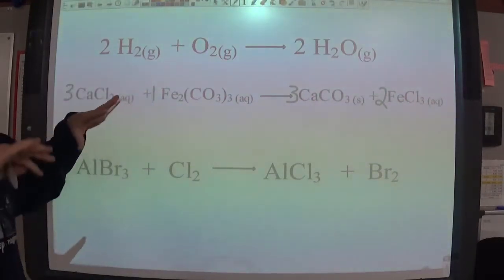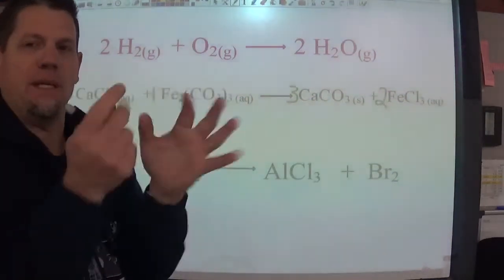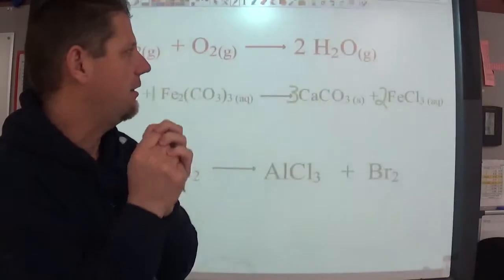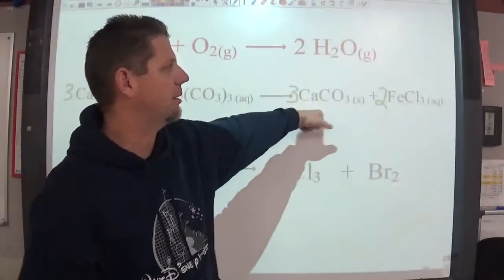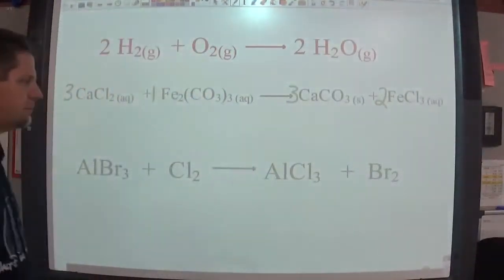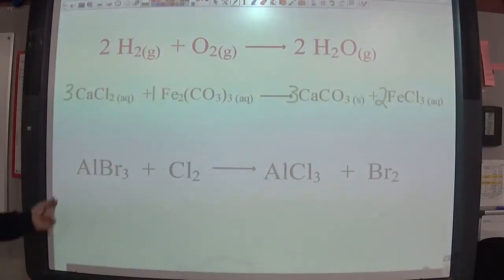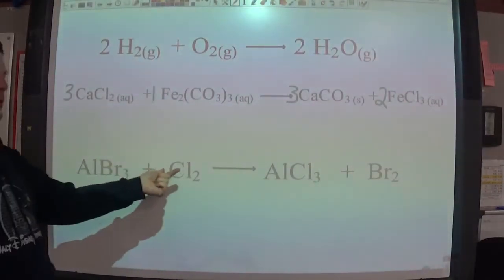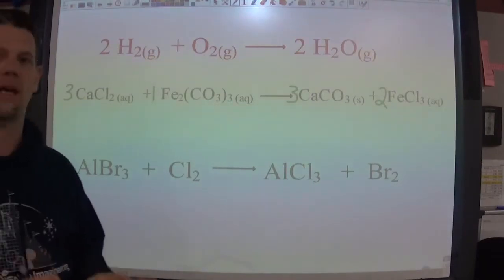So three of these and one of those come together. All the pieces get scrambled and mixed up. And then they get spit back out as calcium carbonate and iron three chloride in the solution. Let's look at this last one one more time. Aluminum bromide reacts with chlorine gas. Remember there were seven diatomic molecules.